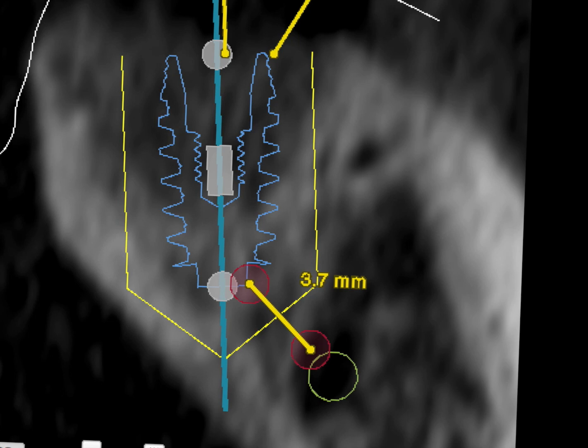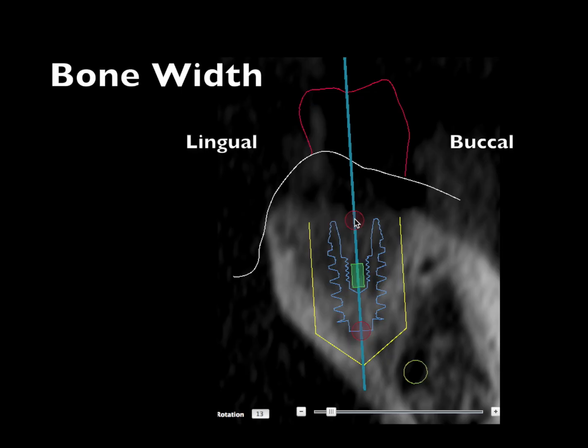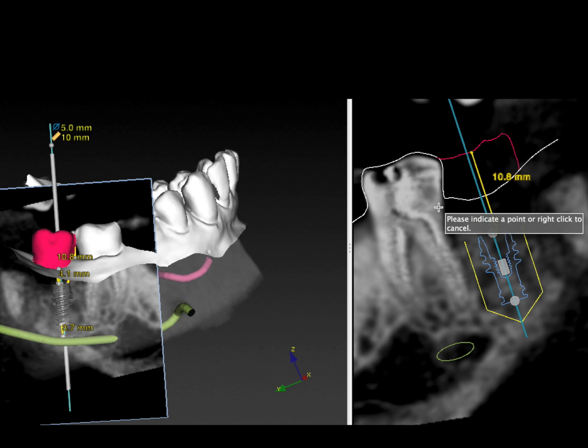One of the biggest troubles clinicians have when doing a standard type of guide is that they don't know the bone width based on the x-ray. Bone width is always critical for us to understand. We can see here from one red arrow to the other red arrow there's more than 2 millimeters of bone space, so we've got a nice case here. This enables you to see the relative thickness and height of the bone and the prosthetic space.